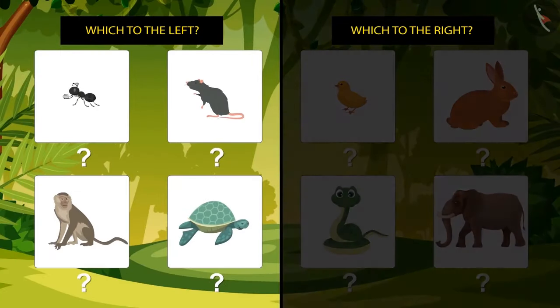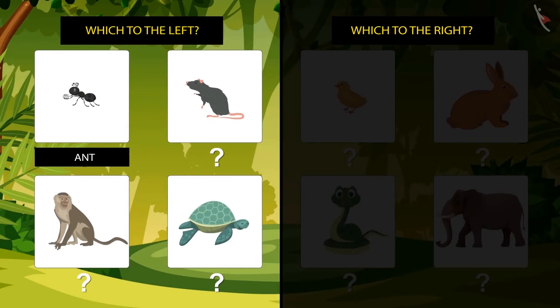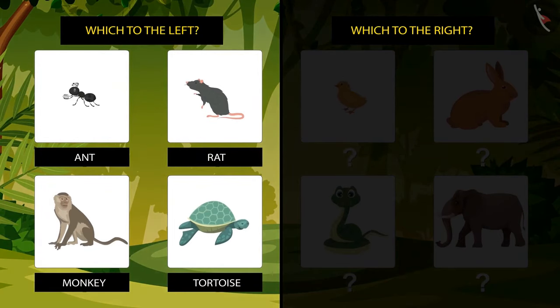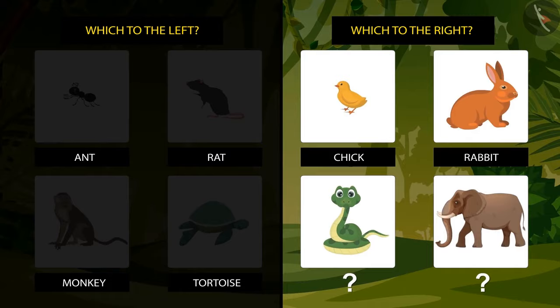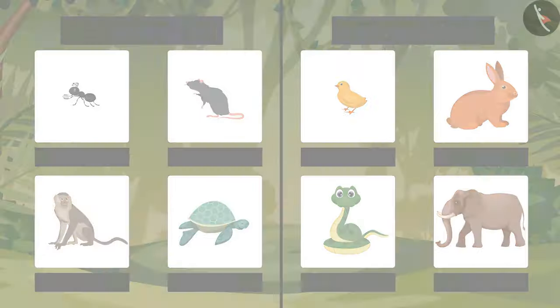To the left are ant, monkey, and tortoise. To the right are chick, rabbit, snake, and elephant.